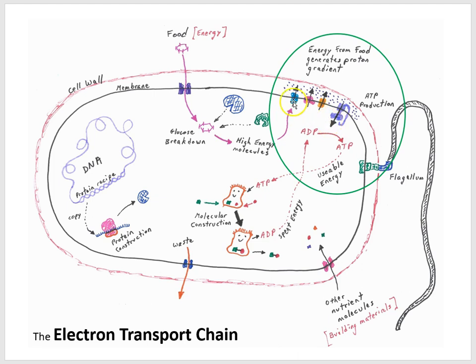This process of the cell pumping hydrogen ions across a membrane and then letting them flow back in, this process is called the electron transport chain and it is a really important discovery about living cells because most cells on earth use this process to create useful energy molecules ATP.